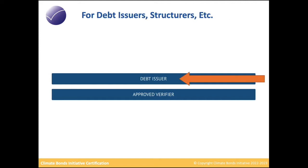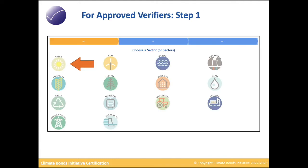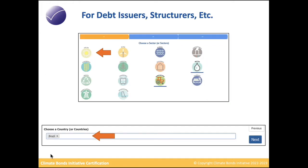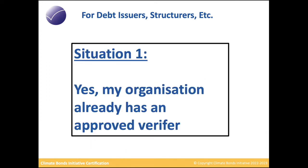In this video we're focusing on debt issuers. The first step as a debt issuer is to choose the sector criteria for the use of proceeds — in this case, let's say you're choosing solar. Next, you'll choose the country where the use of proceeds will be applied, for example Brazil, and then click Next.